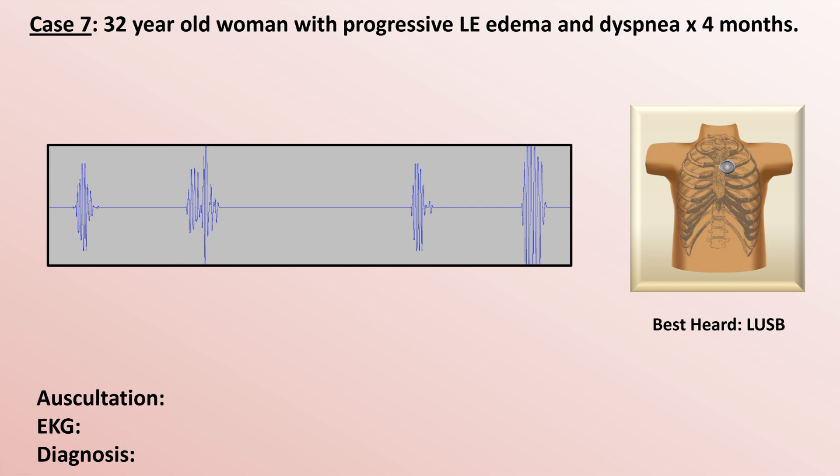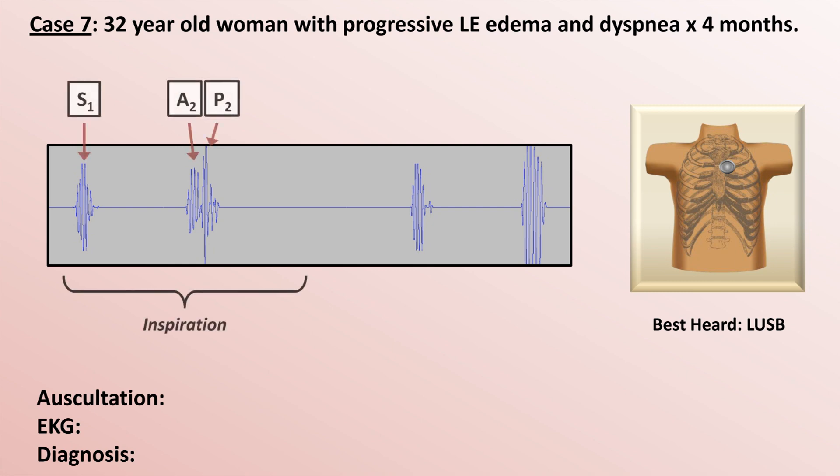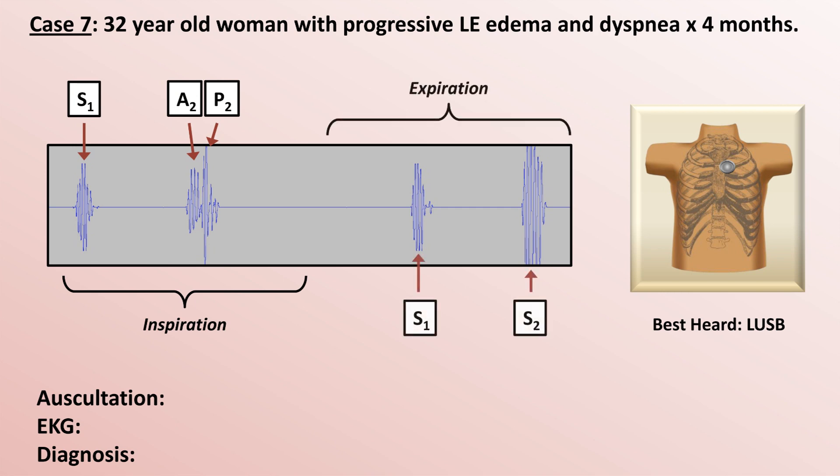This is usually due to systemic hypertension with the aortic valve snapping closed very vigorously as soon as ventricular relaxation has started. However, if you focus on S2 during inspiration — when the aortic and pulmonic components are separated — you may be able to hear that the second component of S2, the pulmonic component, is the louder of the two. That is definitely not normal.